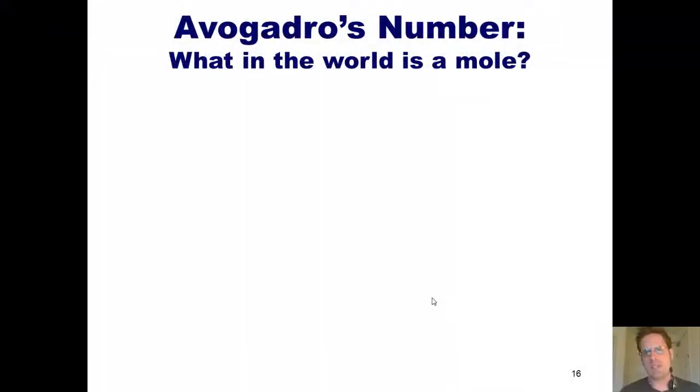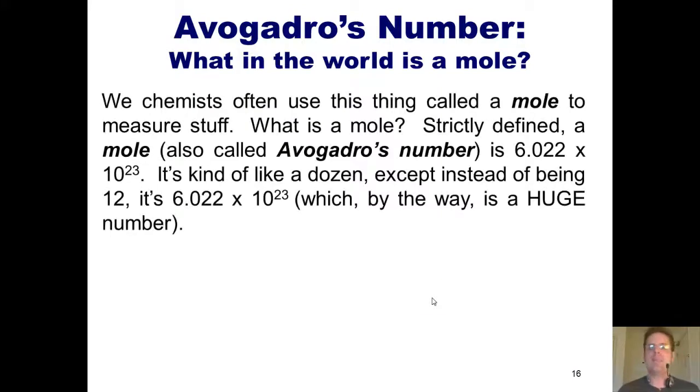We now turn to a different subject: Avogadro's number. What in the world is a mole? We chemists often use this thing called a mole to measure stuff. What is a mole? Well, strictly defined, a mole, also called Avogadro's number, which also happens to be the name of a band I once saw on iTunes, is 6.022 times 10 to the 23rd. It's kind of like a dozen, except instead of being 12, it's 6.022 times 10 to the 23rd, which, by the way, is a huge number.